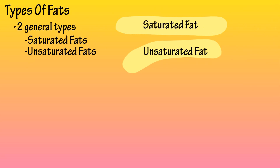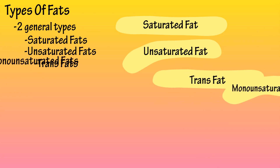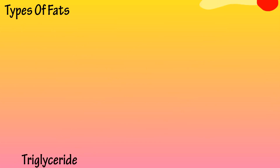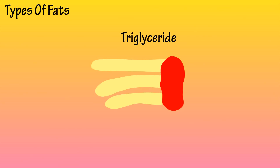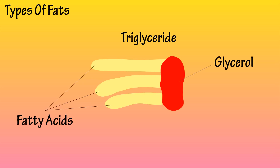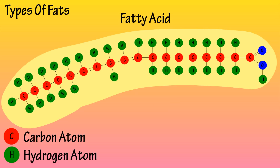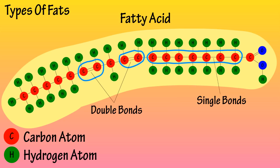What are the different types of fats? There are two general types: saturated fats and unsaturated fats. Unsaturated fats have three different subtypes: trans fats, monounsaturated fats, and polyunsaturated fats. To understand fats better, we need to start with the main form of fat, which is triglycerides. Triglycerides consist of a glycerol unit and three fatty acid chains. Fatty acids are made up of long chains of carbon atoms and hydrogen atoms. Some carbon atoms are linked by single bonds and others by double bonds, and these bonds determine which type of fat the chain is classified as.